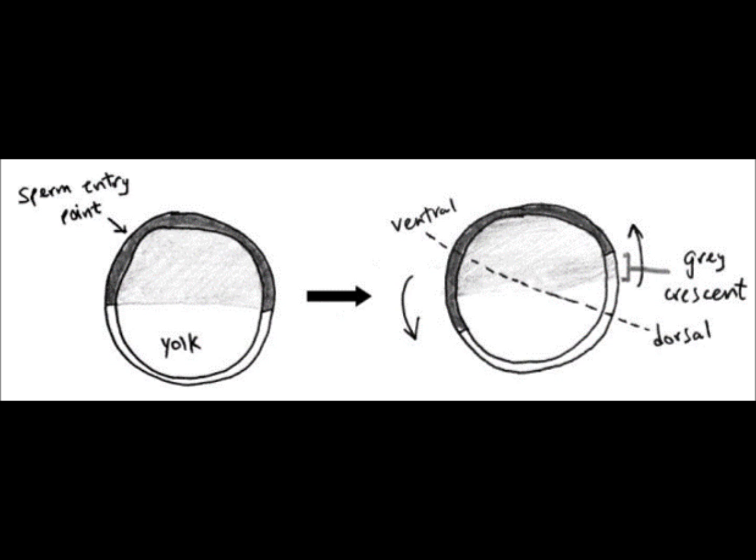This is done with the activity of microtubules. If the activity of microtubules is disrupted by the application of UV light, cortical rotation will not occur. Interestingly enough, when cortical rotation does not occur, the embryo does not develop any dorsal structures and is ventralized.